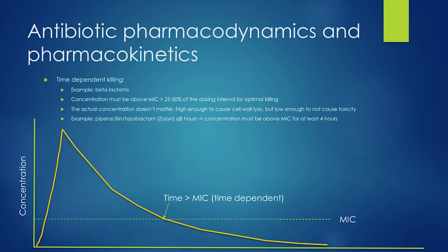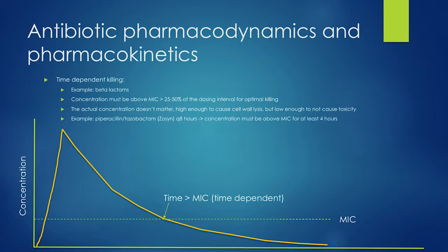Some drugs have time-dependent killing, others have concentration-dependent killing, and some have a combination of both. Time-dependent killing antibiotics such as beta-lactams — the concentration doesn't matter because beta-lactams work on the cell wall, which is the outermost part. You don't need high concentrations, but you need the drug to be there for a long time. Beta-lactam antibiotics are time-dependent killing and that concentration must be above the MIC.